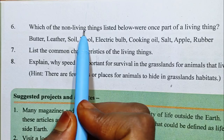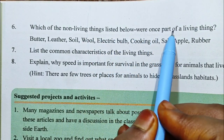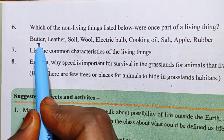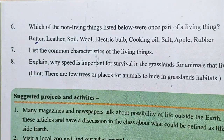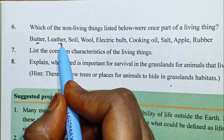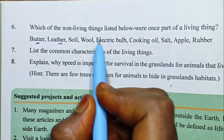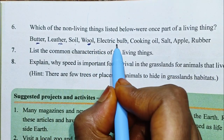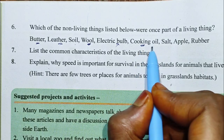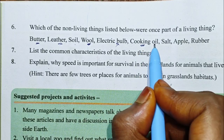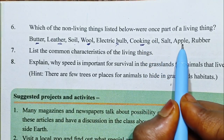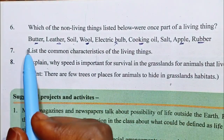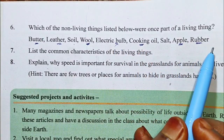Question 6. Which of the non-living things listed below were once part of living things? The answer includes: Butter, Leather, Wool, Cooking oil, Apple, Rubber — these were all once part of living things.